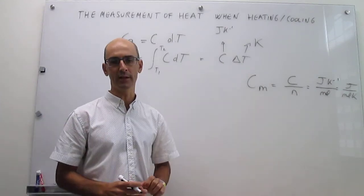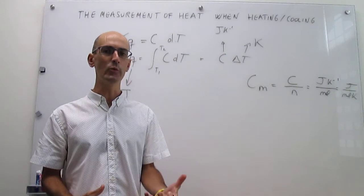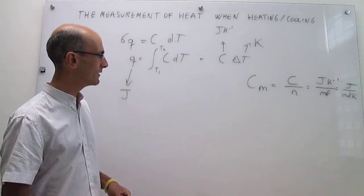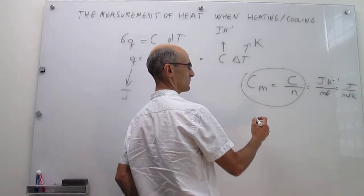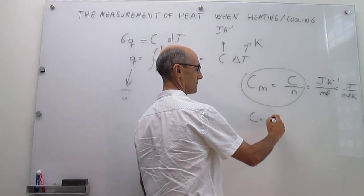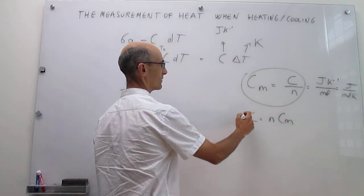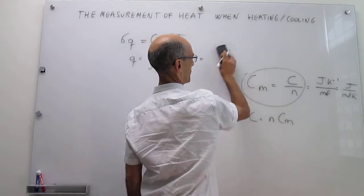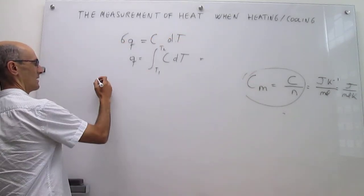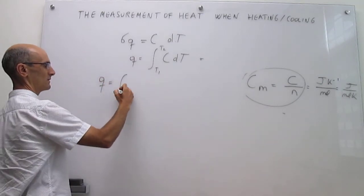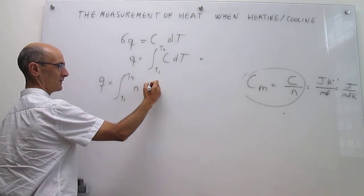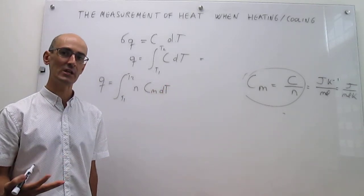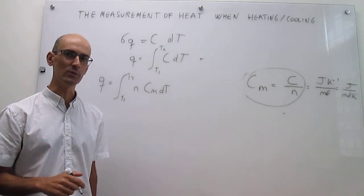If we have tables of molar heat capacities, we rearrange so that the extensive heat capacity equals the number of moles n times the molar heat capacity Cm. Substituting that into the integral expression gives the most commonly used form: Q = integral from T1 to T2 of n·Cm·dT. When Cm is constant this simplifies to Q = n·Cm·ΔT.